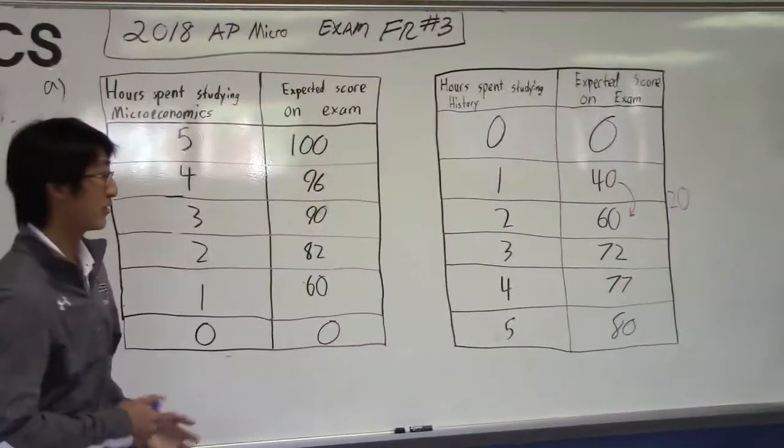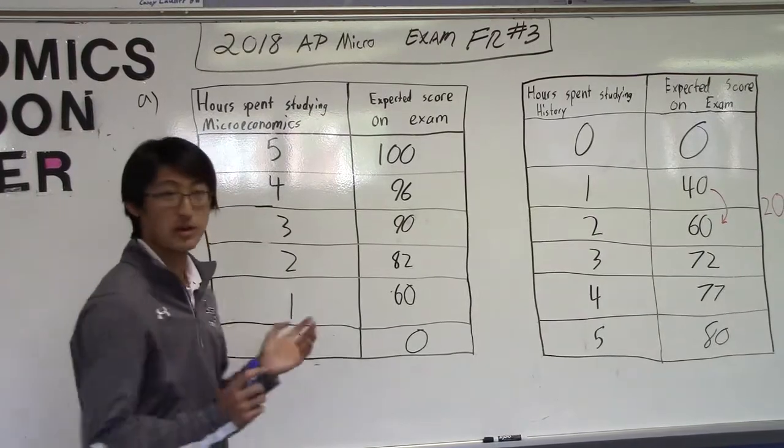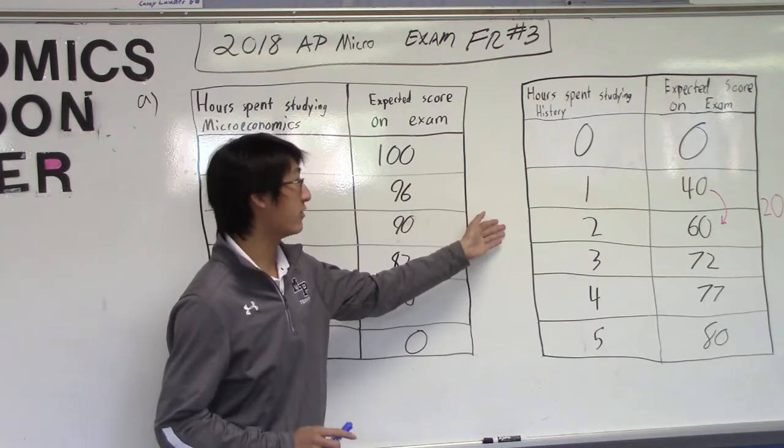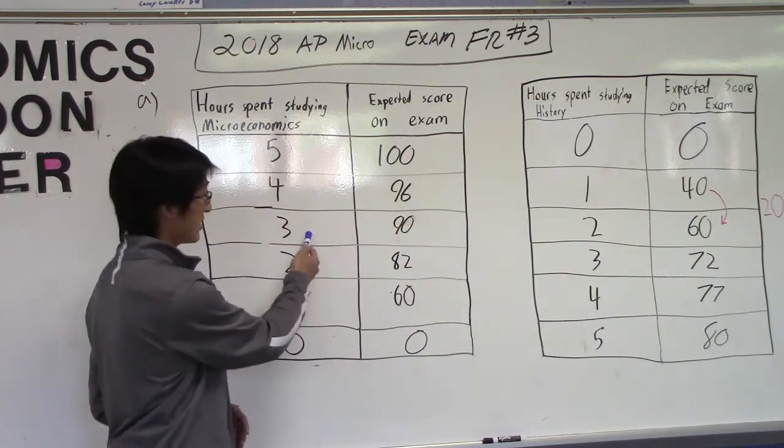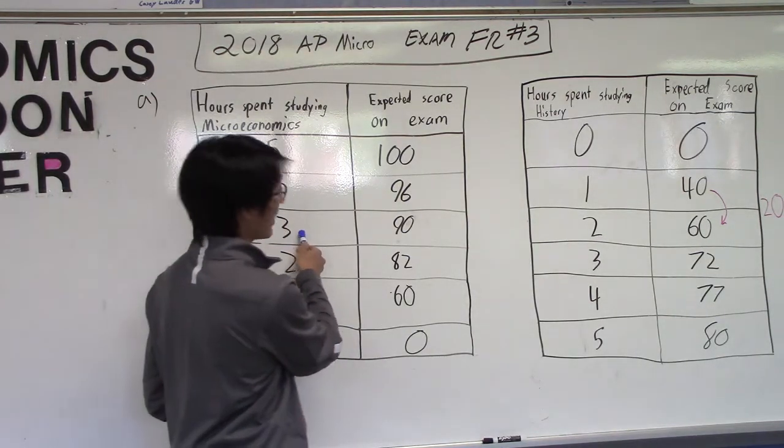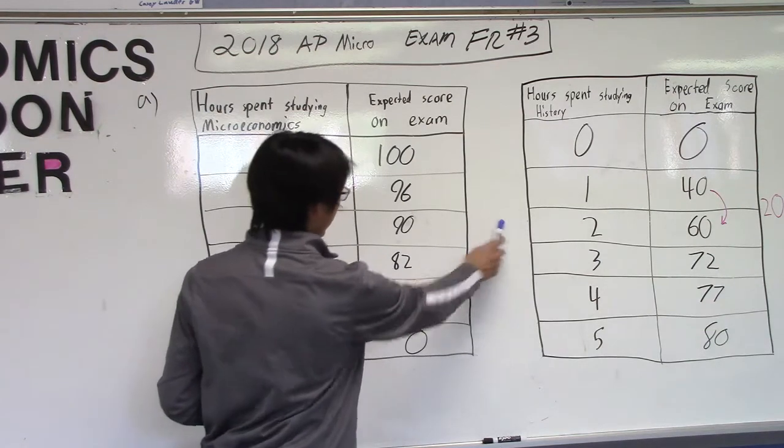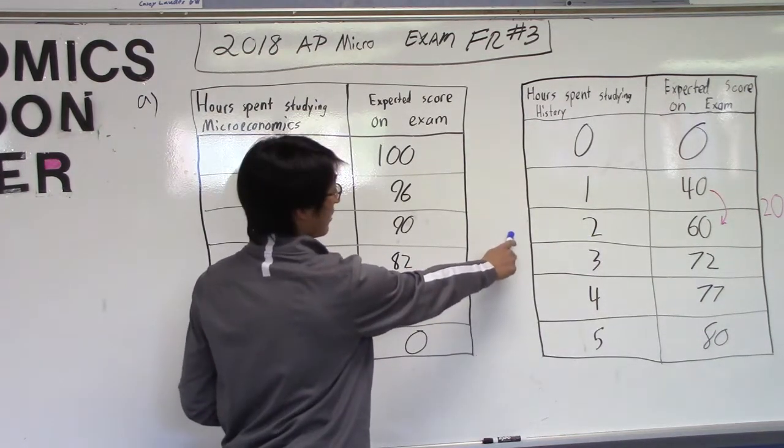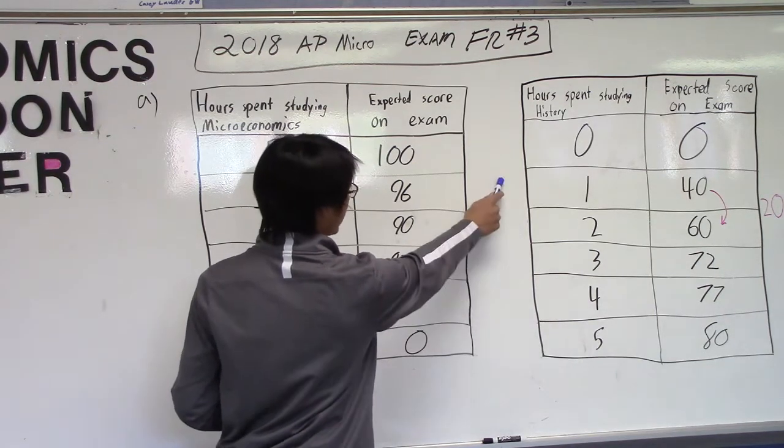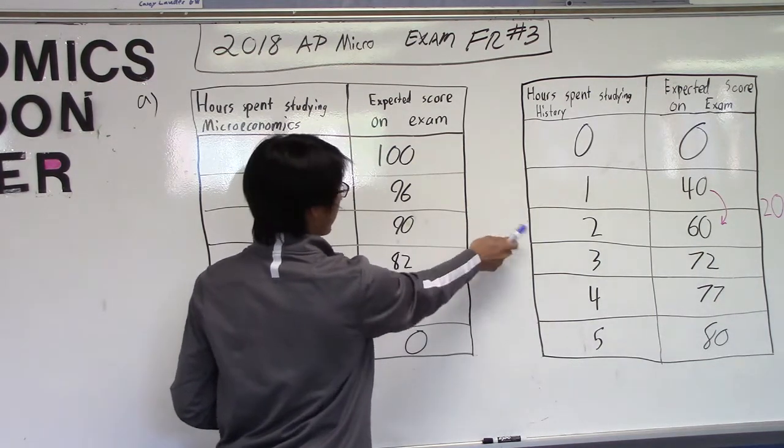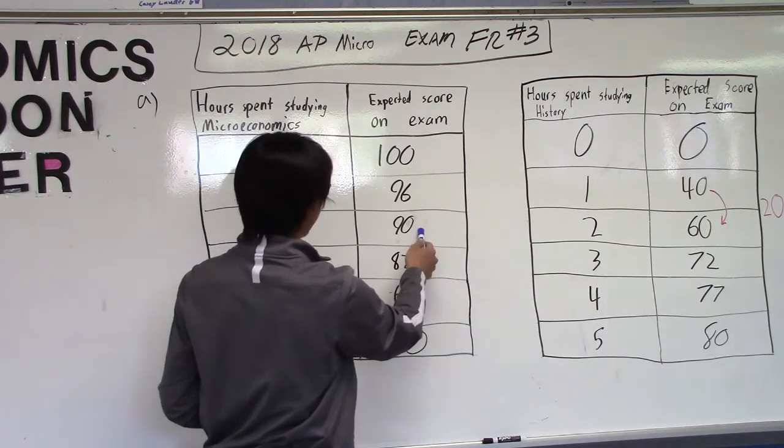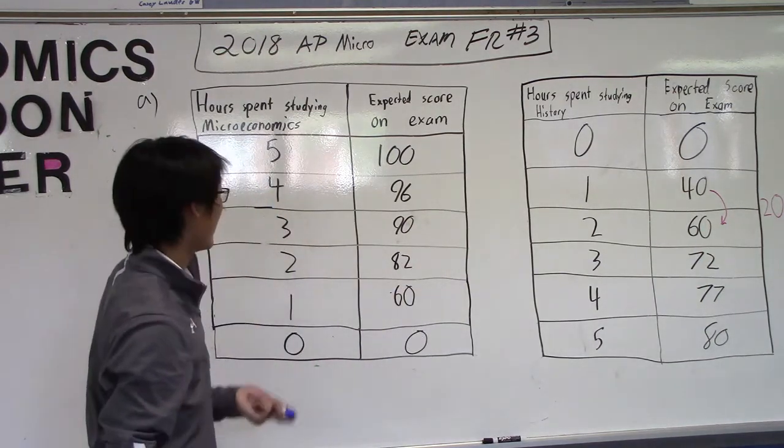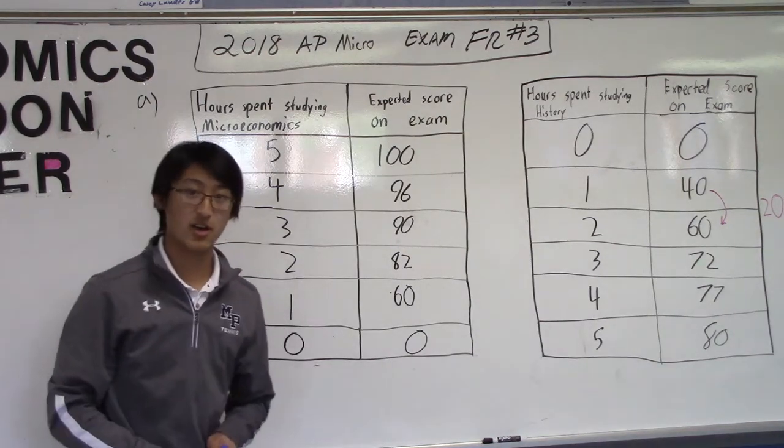Yep, so when looking for opportunity cost here, we really want to see how much of her score she's giving up when she's studying that second hour of history. So, if we say she's studying for three in micro, two for history, she would get a 90 and a 60. But if she gave up that second hour, if she gave up that second hour of studying history, she would gain six points on her microeconomics exam. So that would be the opportunity cost.